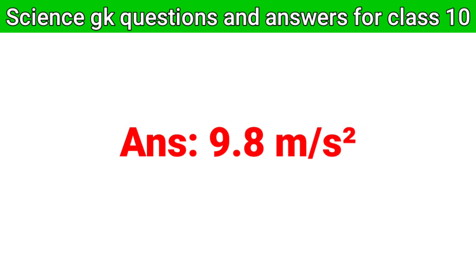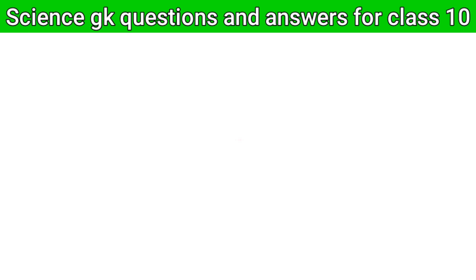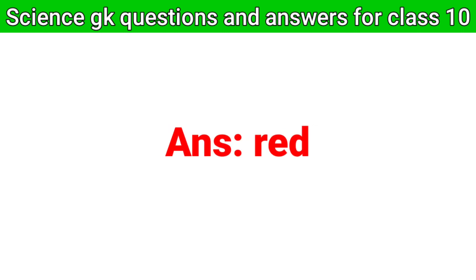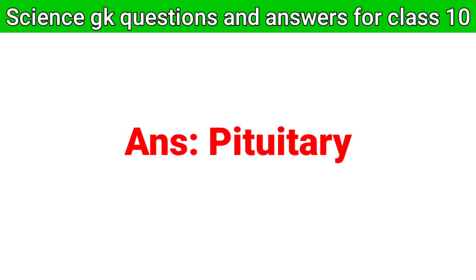Answer: 9.8 meters per second squared. Question number three: what changes the color of blue litmus to red? Answer: acid. Question number four: whose gland secretes the most kinds of hormones? Answer: pituitary.